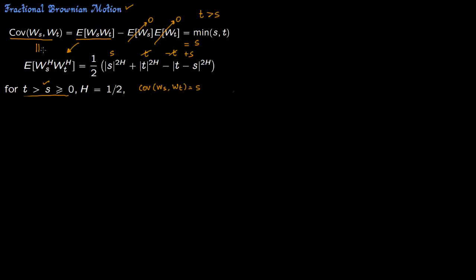So this is precisely the covariance. This is s, this agrees. So for h equals to half, you get Brownian motion.